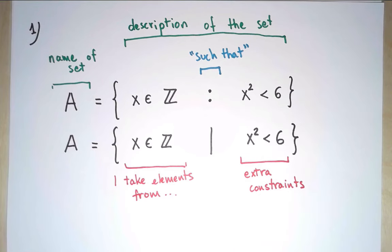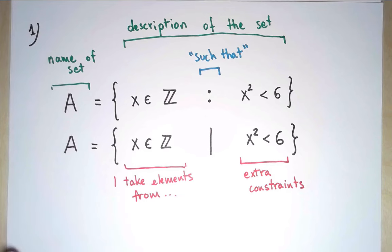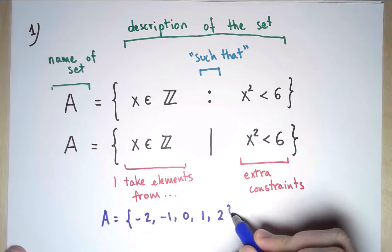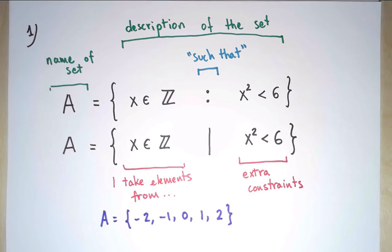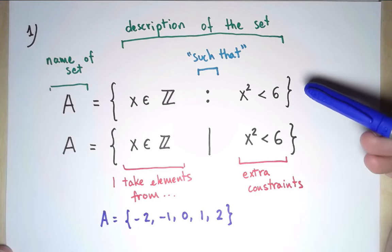And if you think about that, we know what those elements are, because there are not that many integers whose square is less than 6. There are only 5. So we could have simply written an explicit list. Of course, if I wanted to describe this set, I wouldn't have bothered with this. But the point of this was to show with an example how to use this notation.